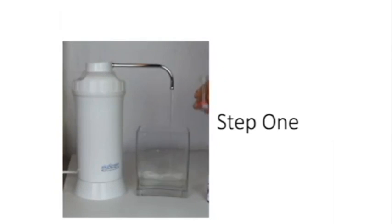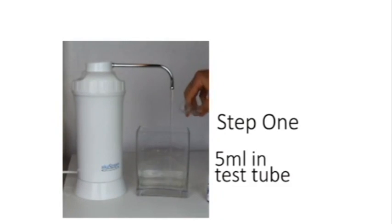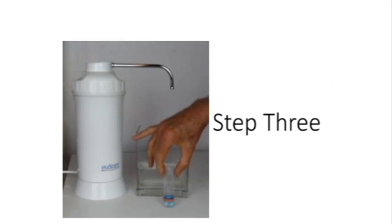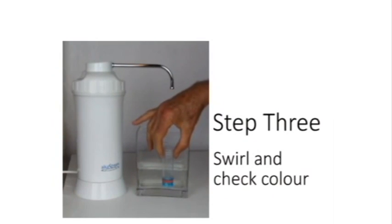The second unit, the Alkaway AlkaStream. We are putting five mil of water directly from the AlkaStream into the test tube. We are adding the blue reagent, one drop, and we're lightly agitating the water to watch to see if it becomes clear. It does not.